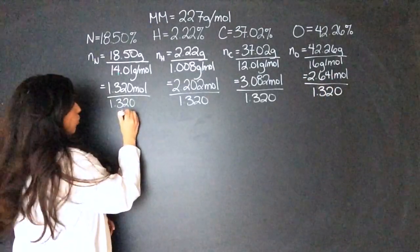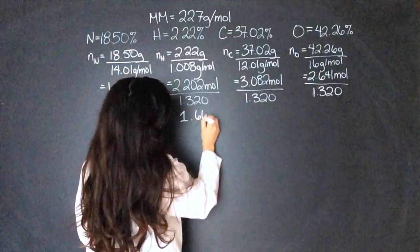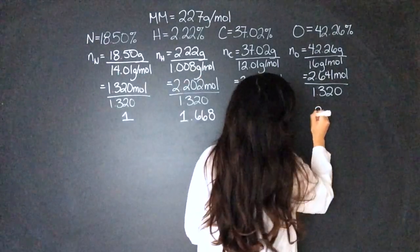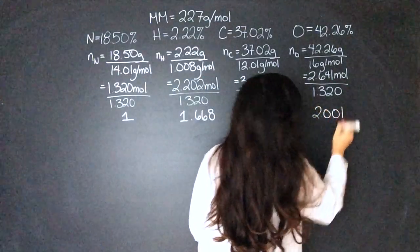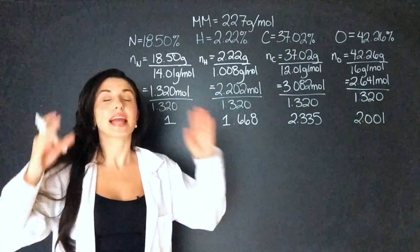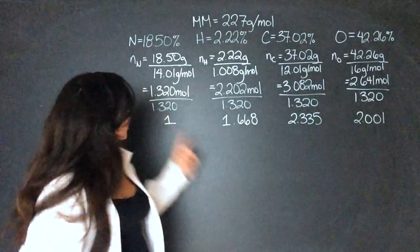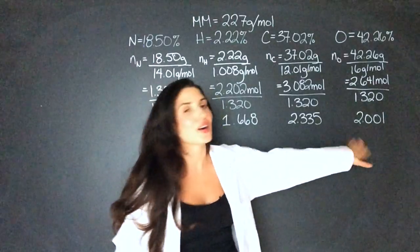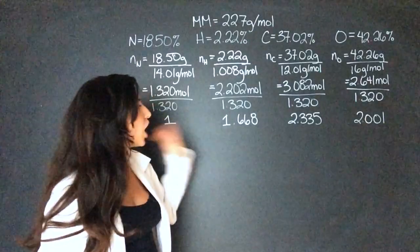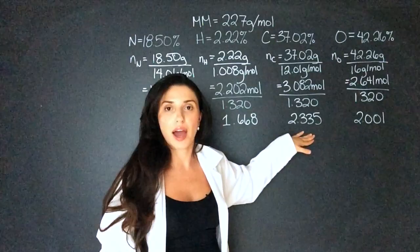That leaves me with 1, 1.668, 2.335, and 2.001. Now the thing I want to make sure you don't do is round these numbers. Let me repeat that. Do not round these numbers. The 1 and the 2 are okay to round. Like 2.001 is okay to say it's 2, but you cannot round 1.668 to 2 or 2.335, okay?